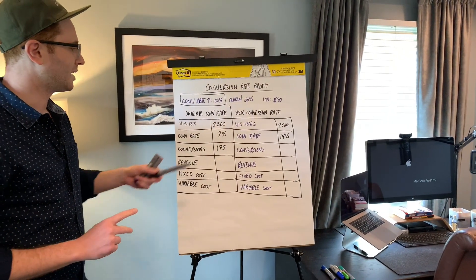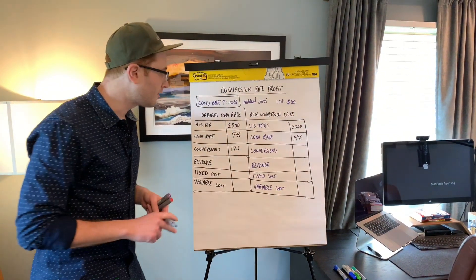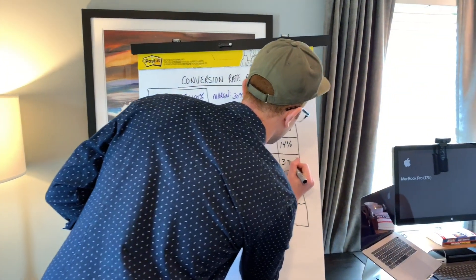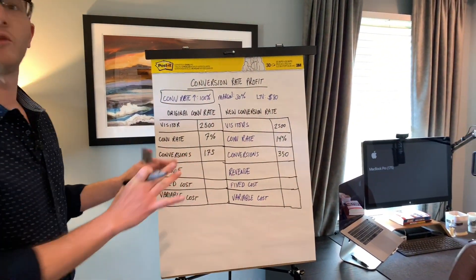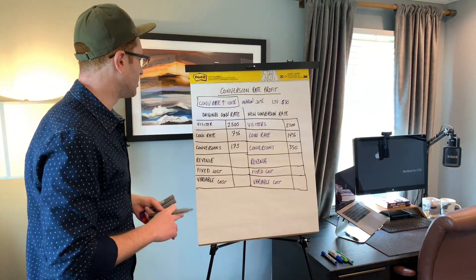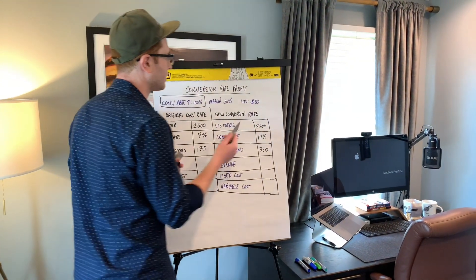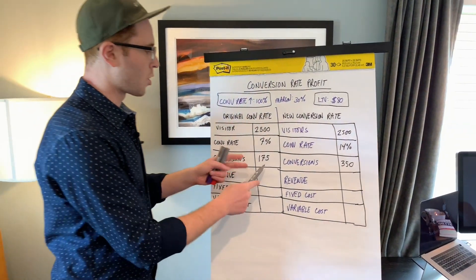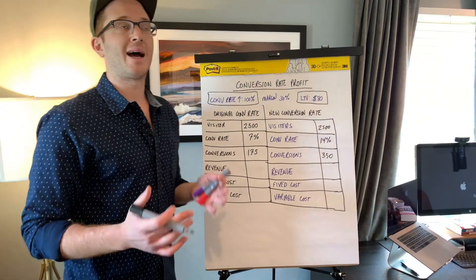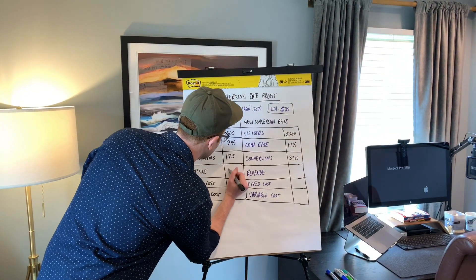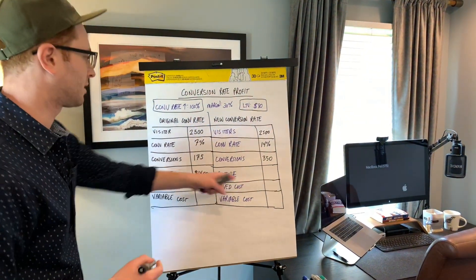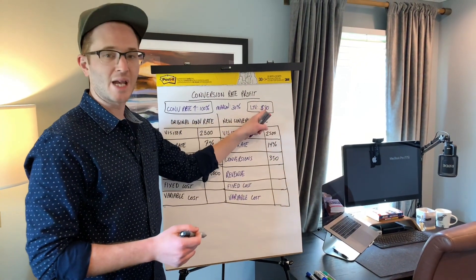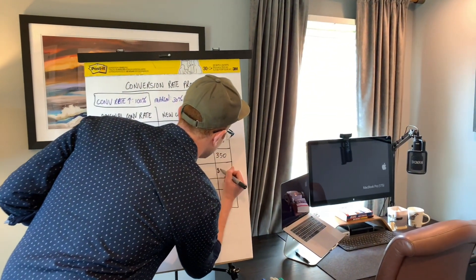When you double the conversion rate, you get double the volume of conversions — so we go from 175 to 350. Revenue is simply conversions multiplied by LTV ($80). So 175 × $80 = $14,000 in revenue for the original scenario, and 350 × $80 = $28,000 in revenue for the improved scenario.